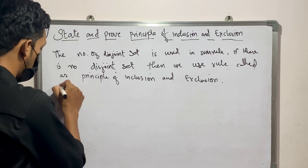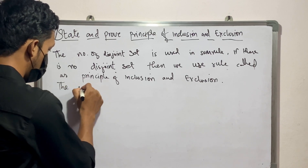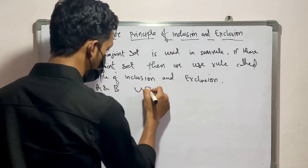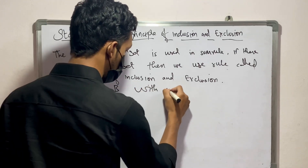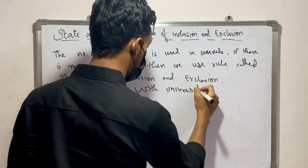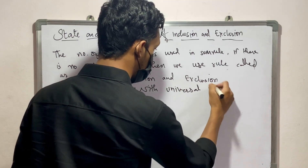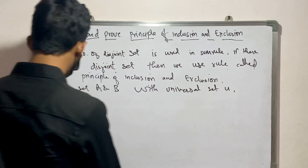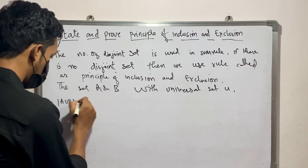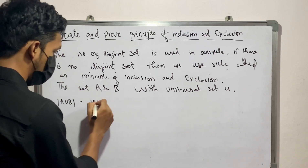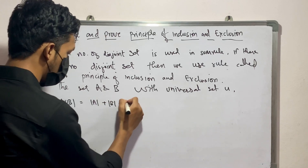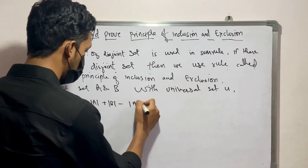We consider sets A and B with a universal set U, where the formula for A union B is equal to mod A plus mod B minus mod A intersection B.